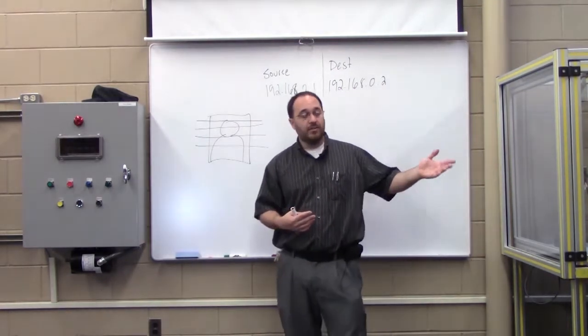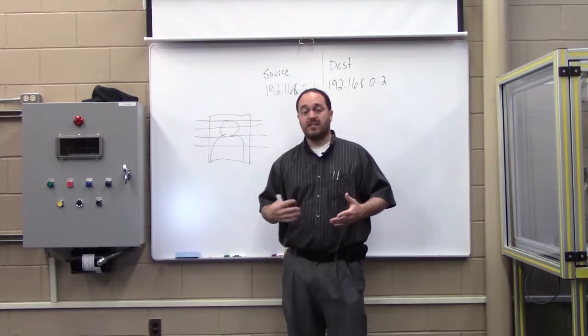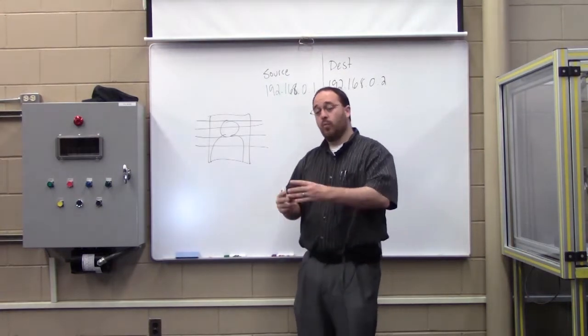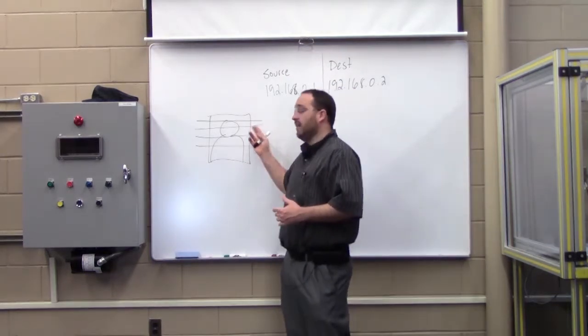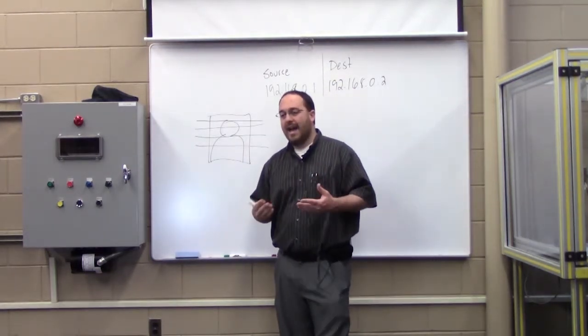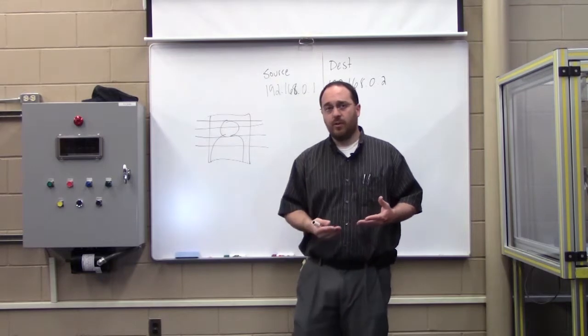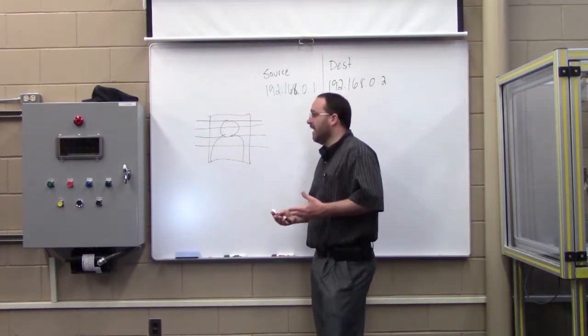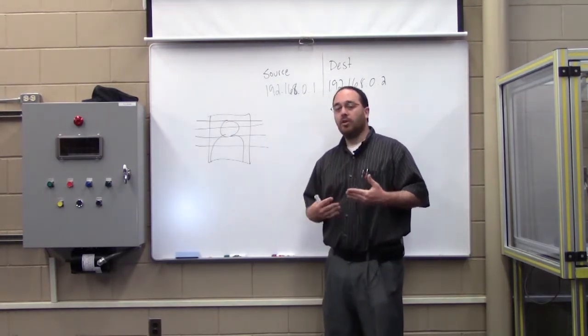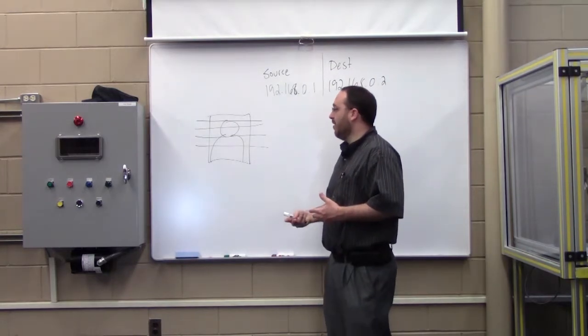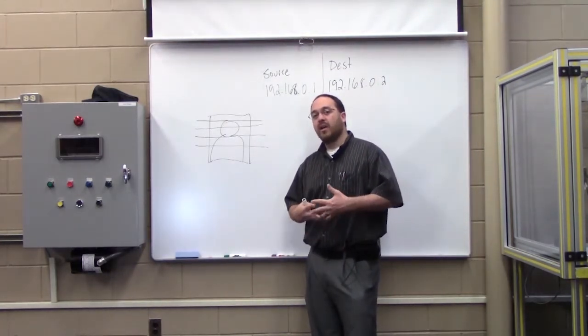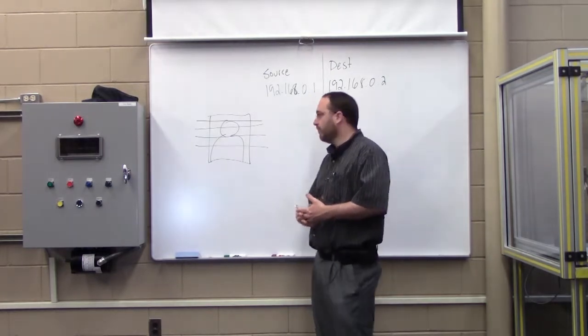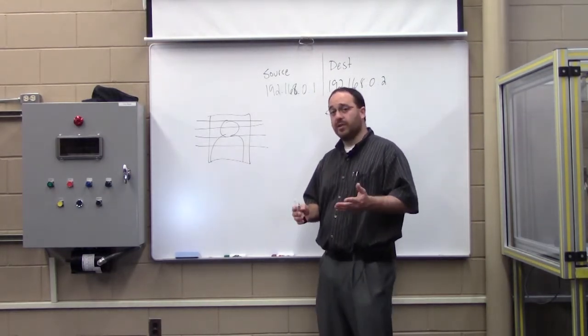And then we do what's called interleaving, in which we share the medium or the wire with other devices on the network. So we'll take the first chunk of our picture, we'll put it on the wire. And then maybe another two, three, four, five, six computers will send a chunk of their data on the wire. And then it will come back around to us and we will send another chunk. Now this all happens in milliseconds. So the user doesn't really recognize that this is happening. But you are sharing that network with other devices. And if we try to transmit at the same time, we have what's called a collision, which there's a whole process for resolving a collision.